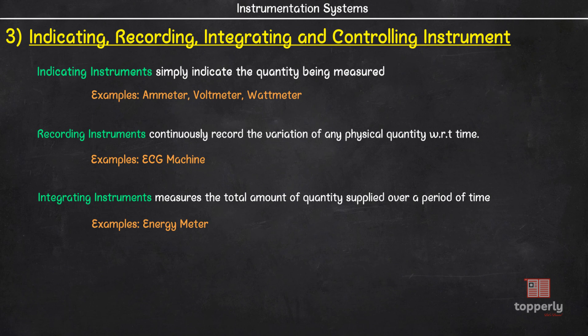A commonly used integrating instrument is the energy meter in our homes which shows us the consumption of total quantity of electricity during a particular period of time. Finally, we have the controlling instruments. In this case, the information is used by the instrument to control the original measured quantity. An example is electrical relays.